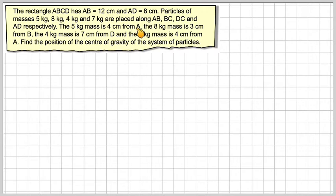The 5 kilogram mass is 4 centimetres from A, the 8 kilogram mass is 3 centimetres from B, the 4 kilogram mass is 7 centimetres from D and the 7 kilogram mass is 4 centimetres from A. Find the position of the centre of gravity of the system of particles.